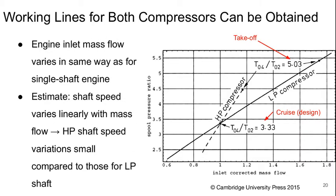So, we can get the working lines for both compressors. The engine mass flow varies in the same way as for a single shaft engine. And we can roughly estimate that the shaft speed is going to vary linearly with mass flow. This tells us that the high-pressure shaft speed variations are going to be small compared to those for the LP shaft.